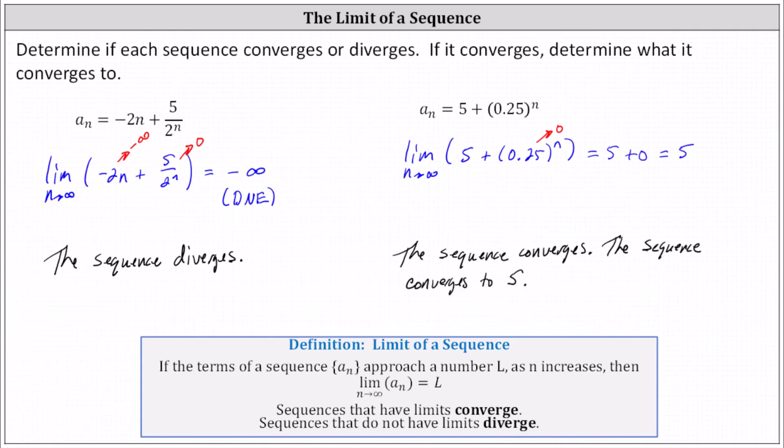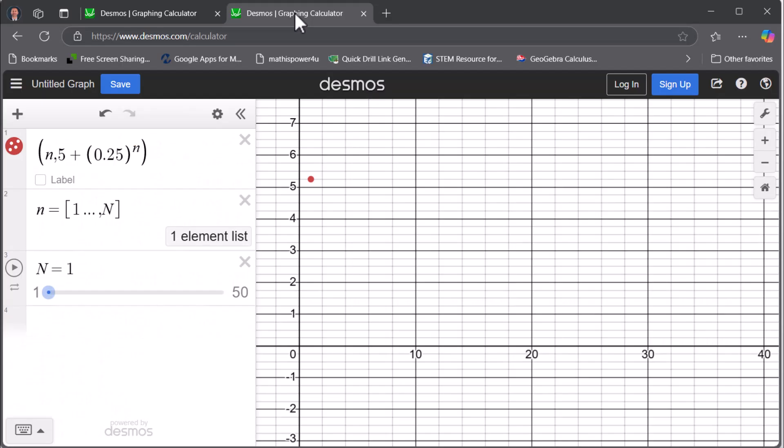Let's take a look at this graphically. We'll plot points on the coordinate plane in the form of n comma a_n. Looking at the first 50 points, notice the y values quickly approach positive 5, which is why the sequence converges, and we can see it converges to 5.